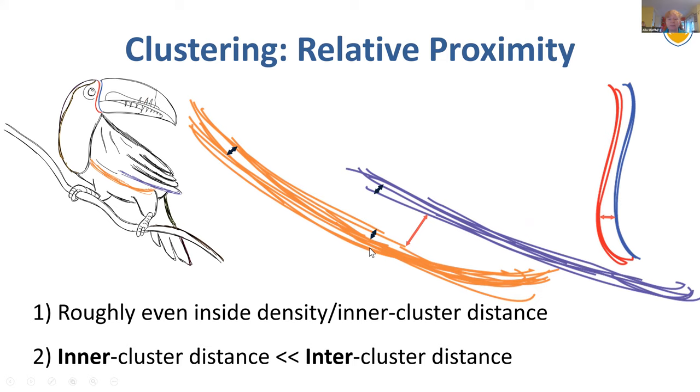And if you look at Gestalt psychology, it gives you some interesting hints, because what it says is that people look at relative proximity. When you have a group of objects which have roughly the same distance between them, and then there is a big jumping distance to the next group, then we end up grouping the first ones together. And anytime we see a jumping distance, mentally, we separate things.